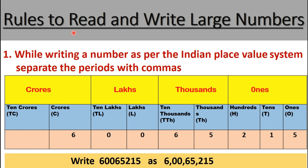Before we go to the next examples, let us know the rules to read and write large numbers. Rule number 1: while writing a number as per the Indian place value system, separate the periods with commas. For example, the number 60065215 is separated with commas based on the periods. The first comma is placed before the third digit from the right, since the ones period has 3 places. Since the remaining periods are divided into 2 places, commas are placed after every 2 numbers.